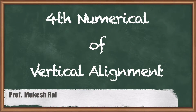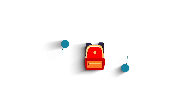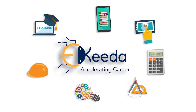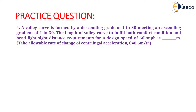Hello students, today we are going to solve the fourth numerical of vertical alignment. The question is: a valley curve is formed by a descending gradient of 1 in 30 meeting an ascending gradient of 1 in 30. The length of valley curve to fulfill both comfort condition and headlight sight distance requirements for a design speed of 60 kilometers per hour is how many meters?